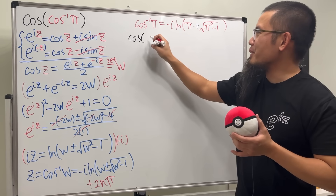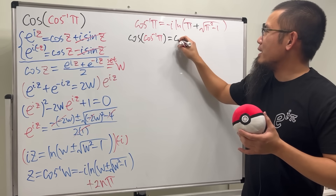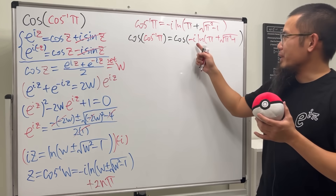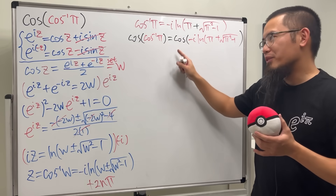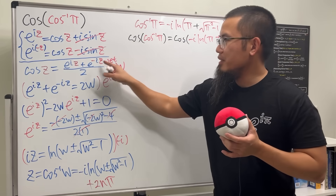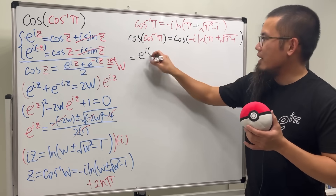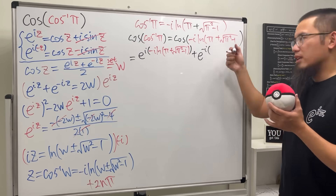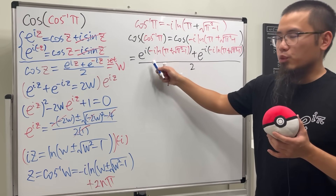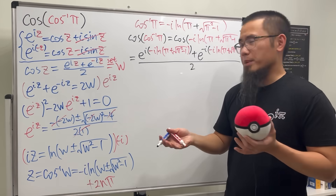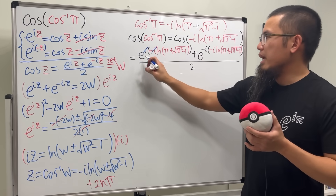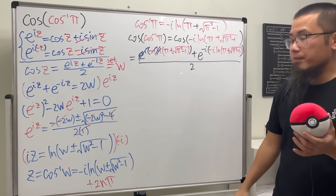Cosine of arccos(π) becomes cosine of that complex expression. This is a complex number inside cosine, so we use the complex definition. We plug this expression into the formula e to the iz plus e to the negative iz over 2. Now check this out: i times i is negative one, times the negative one already there, so altogether it's positive one. The i's cancel nicely and e and ln cancel out for the first term.